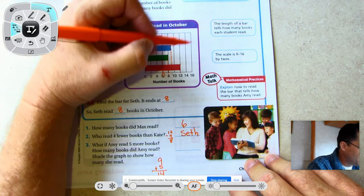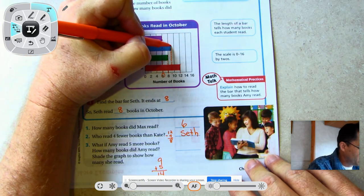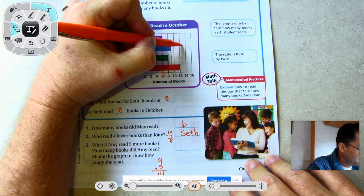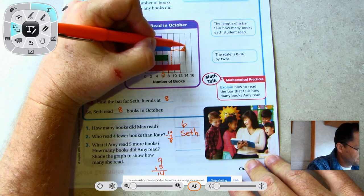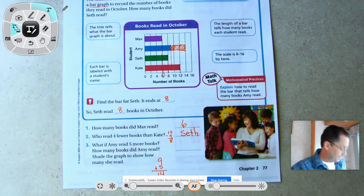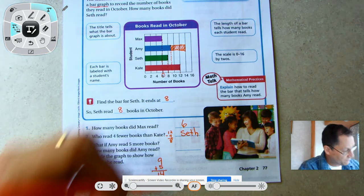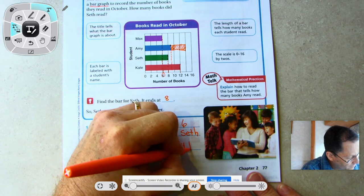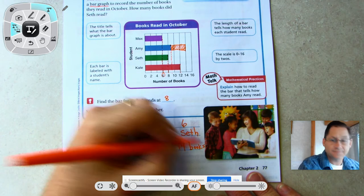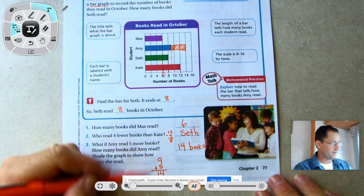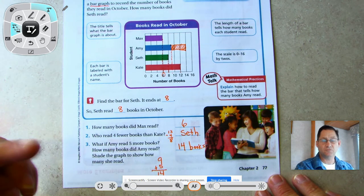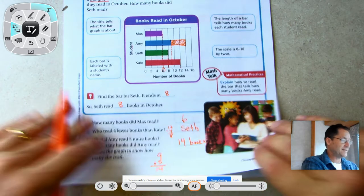Amy right now is in between eight and ten - the number in between eight and ten is nine. So what if she read five more books? She would now have fourteen. Shade the graph to show how many she read. The bar would end at fourteen now. So how many books did she read? 14 books, because all we did was add nine plus five.